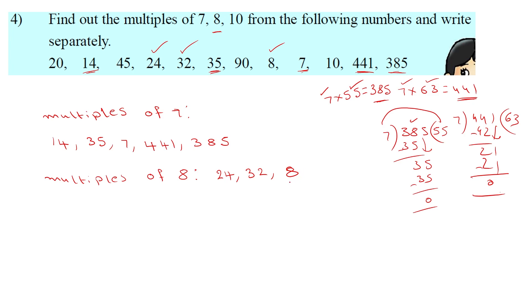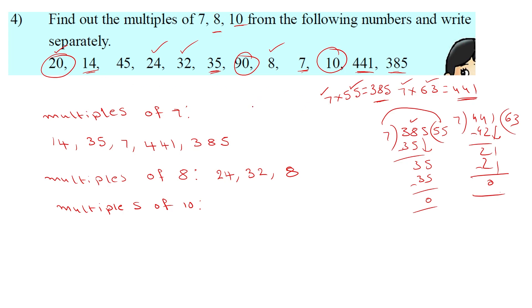For multiples of 10: a number is a multiple of 10 if its units place is 0. Checking the numbers: 20 — yes; 90 — yes; 10 — yes. So the multiples of 10 are 20, 90, and 10.